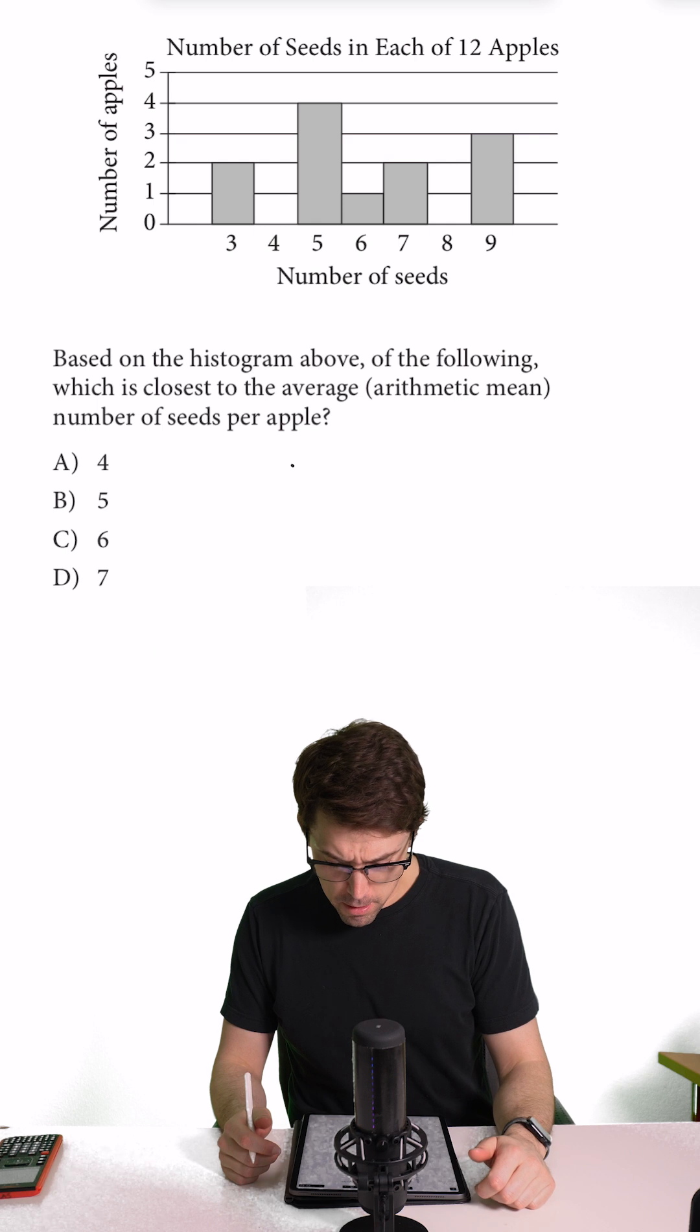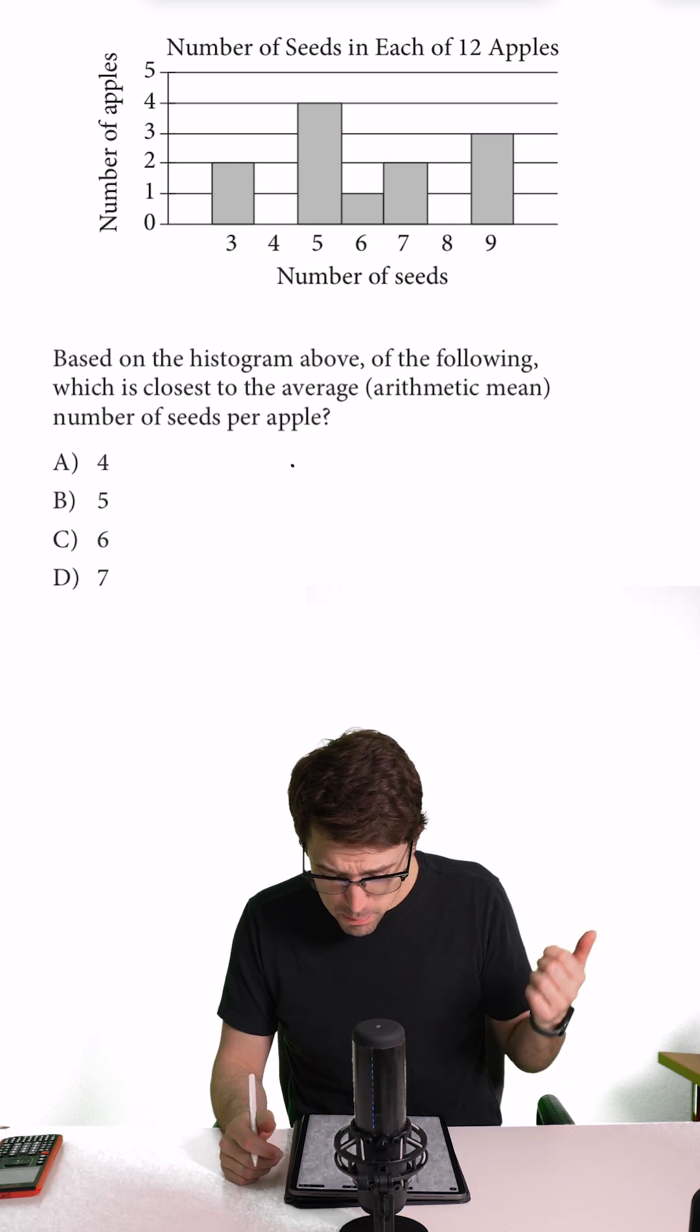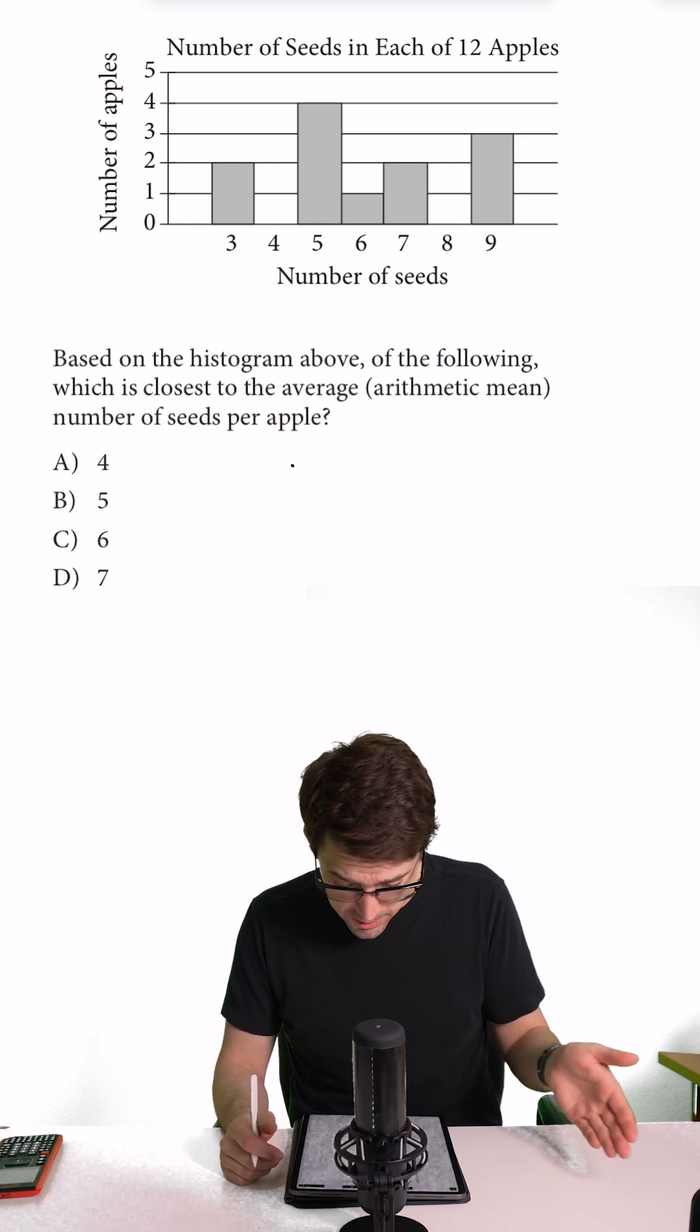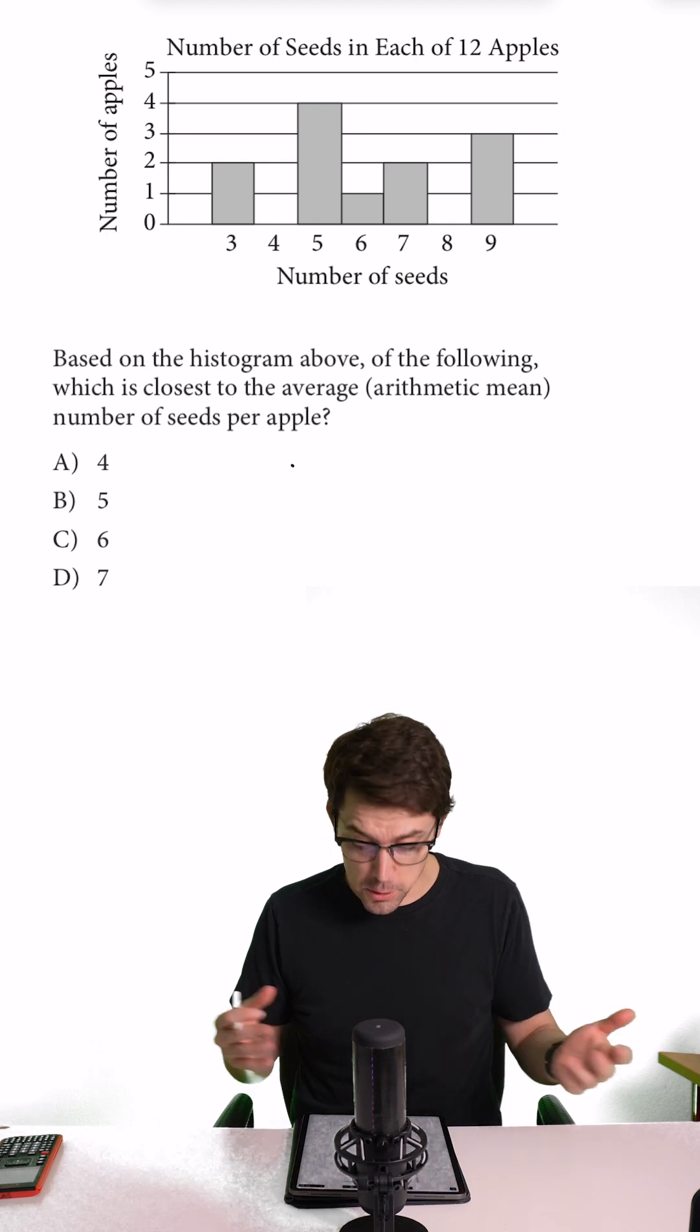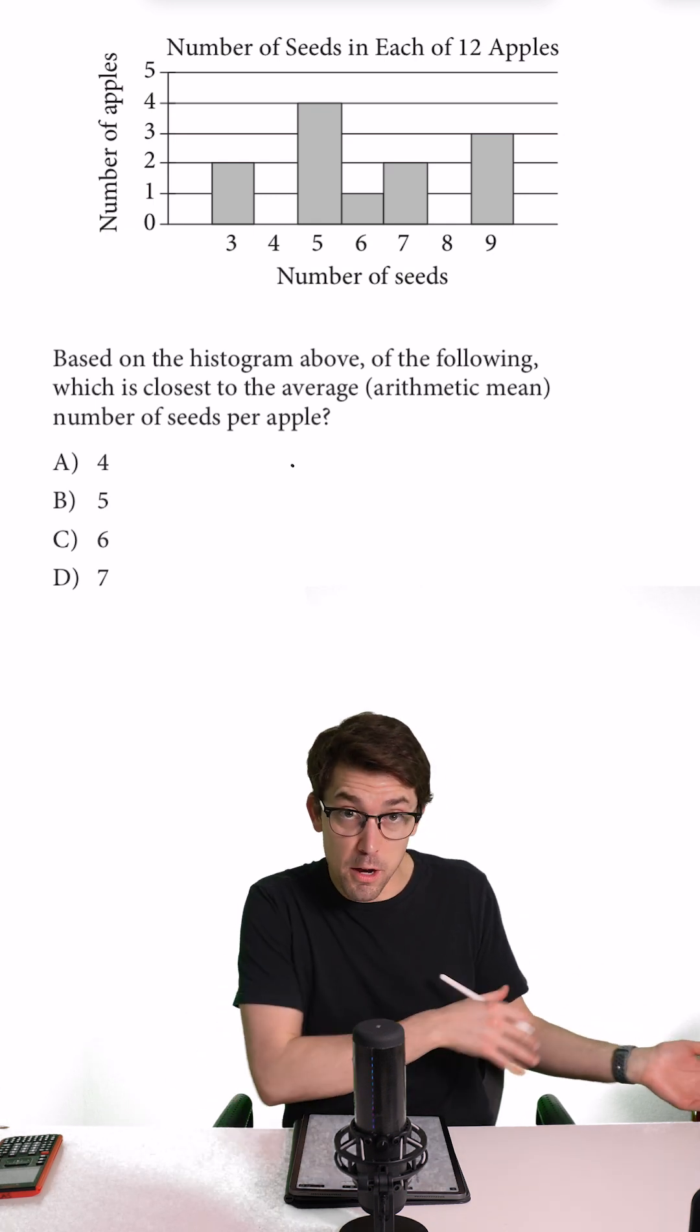Based on this histogram above, which is the closest average of the arithmetic mean to the number of seeds? What we got to do is figure out the total number of seeds and then divide it by the number of the apples.